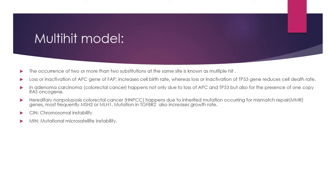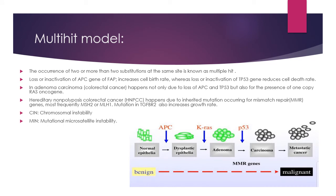For the multi-hit model, the occurrence of two or more substitutions at the same site is known as multiple hits. Loss or inactivation of the APC gene (adenomatous polyposis coli gene) of FAP increases cell birth rate, whereas loss or inactivation of the TP53 gene — which produces p53, also called the guardian of the genome — reduces cell death rate. In adenoma or colorectal carcinoma, cancer occurs not only due to loss of APC and TP53 but also due to the presence of one copy of the RAS oncogene.